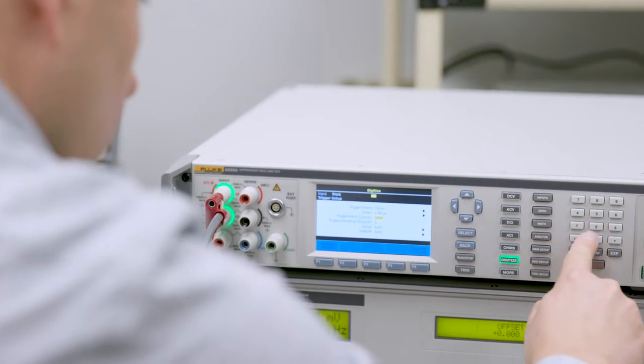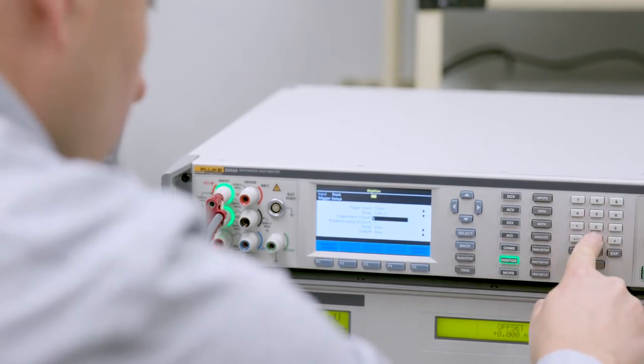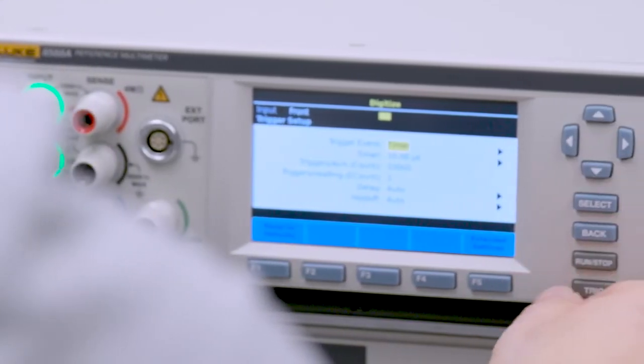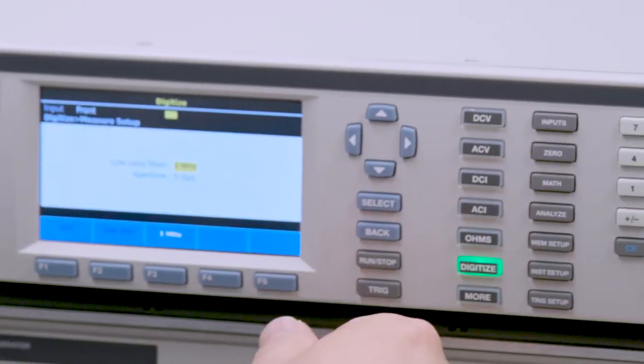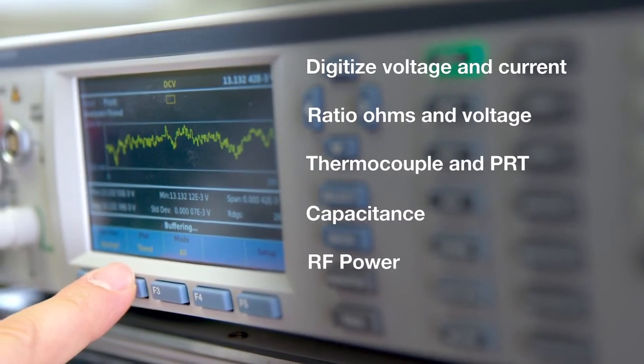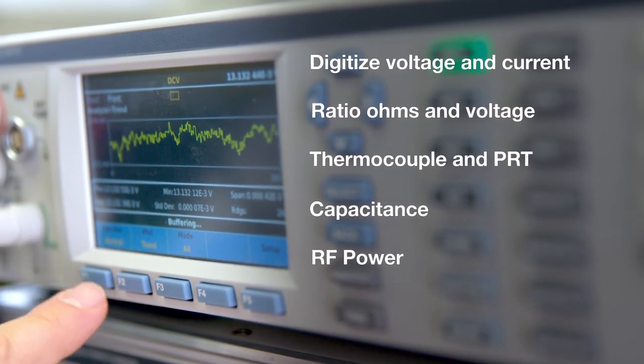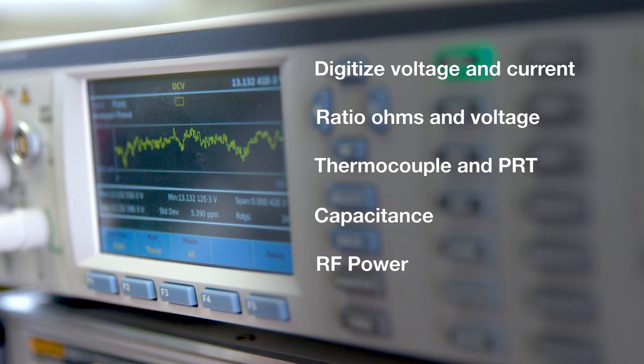The 8588A's intuitive menu structure, real-time trending and statistics, and expanded measurement capabilities create a delightful user experience. It has enough memory to hold 10 million internal readings, which can be graphically displayed simultaneously on the full-color user interface.